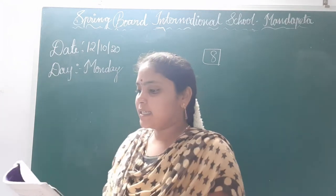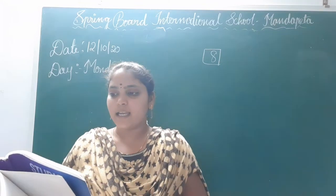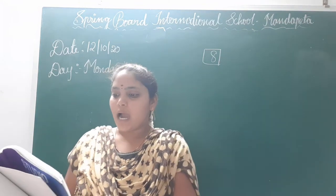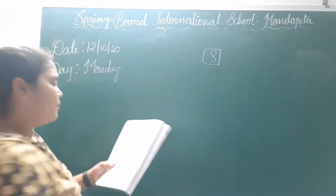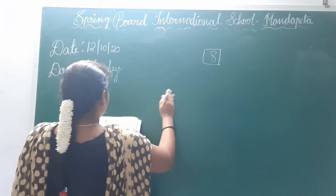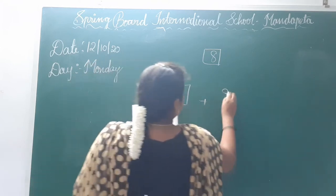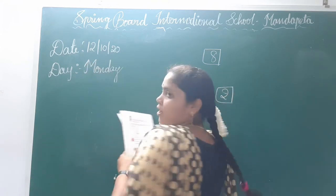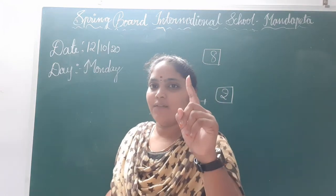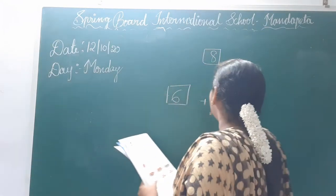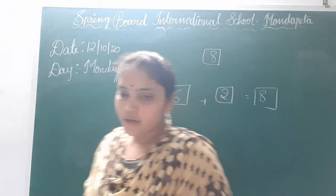Now page number 58. Anjali buys 6 bangles from one shop and 2 bangles from another. So first she bought 6 bangles in one shop and 2 bangles in another shop. So 6 plus 2: 6, 7, 8. Total bangles is 8. Note down everyone.